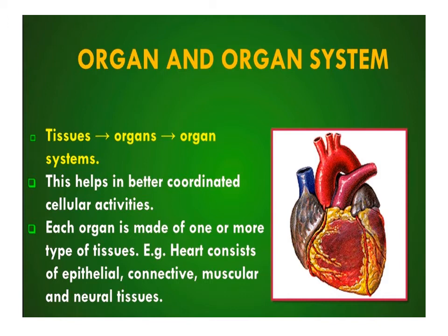A group of similar cells along with intercellular substances performing a special function is called a tissue. Complex animals consist of four basic types of tissues. The tissues are organized to form organs. Two or more organs that interact to perform a common function constitute organ systems.